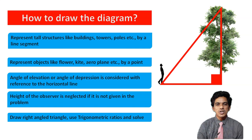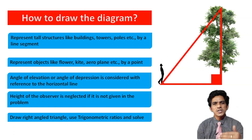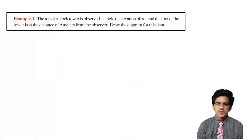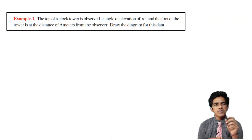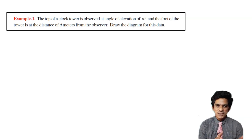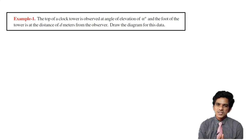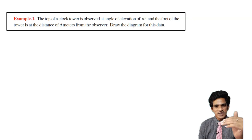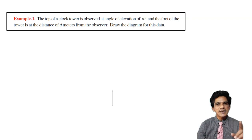These are the basic rules to follow when drawing a diagram corresponding to a given problem. Now have a look at this problem — this is Example 1 from your textbook. The top of a clock tower is observed at an angle of elevation of alpha degrees, and the foot of the tower is at a distance of d meters from the observer. Draw the diagram for this data.